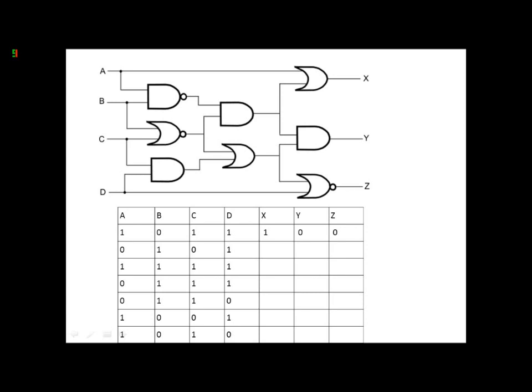For the next one, if A is 0, then we have to do the long way around for X, which would be this. So A and B, but B is 1, so that means that X is 0.